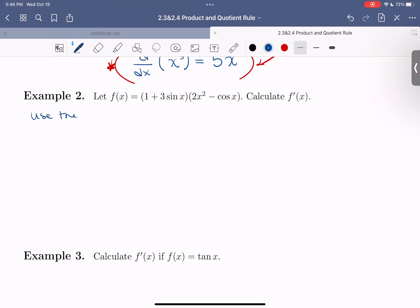So use the product rule. Let's write that out. The derivative here with respect to x of f is going to equal the derivative of that first function (1 + 3sin x) times the second function (2x² - cos x)...